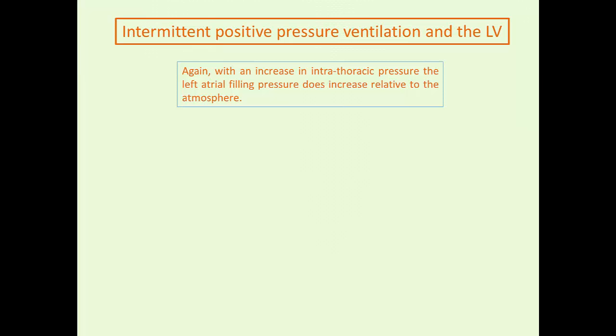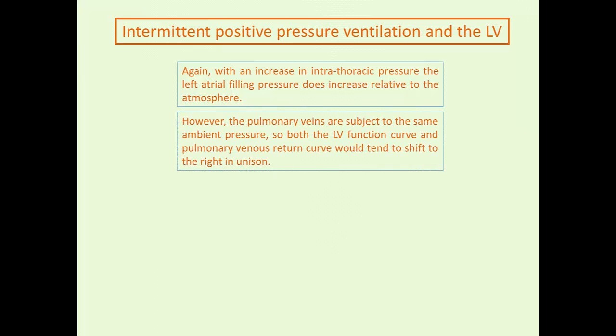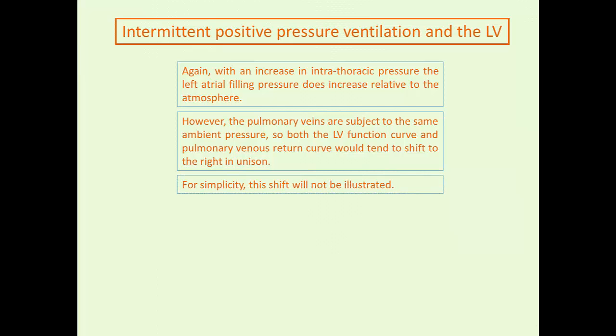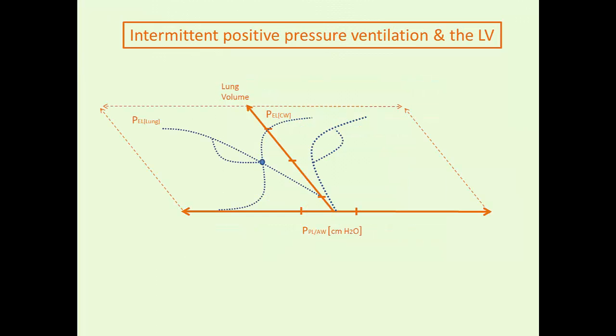With the increase in intrathoracic pressure, the left atrial pressure does not increase relative to atmosphere — the pulmonary veins and left heart cardiac function curve are shifting in tandem because the pulmonary veins are subject to the same ambient pressure. But the increase in lung volume decreases the capacitance of the pulmonary veins, which tends to shift the pulmonary venous return curve to the right relative to the left ventricular cardiac function curve. This is the modified Campbell analysis with intermittent positive pressure ventilation.